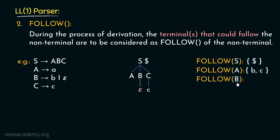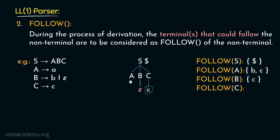Let's now find out the follow of B. B is being followed by the terminal symbol C. Hence the follow of B will have the terminal 'c'. Now what about the follow of C? Although it may look like C is being followed by nothing, but S was being followed by the dollar symbol. And while S got replaced by the string ABC, C became the rightmost symbol, which should also be followed by the dollar symbol. Therefore, the follow of C will have the dollar symbol.